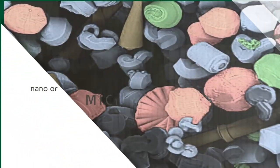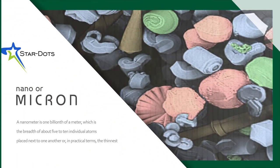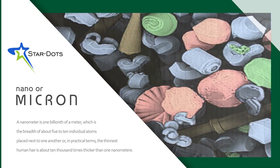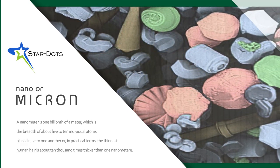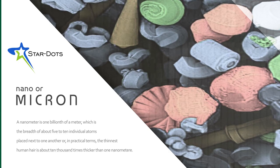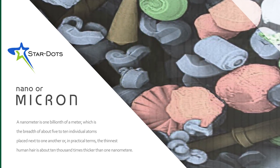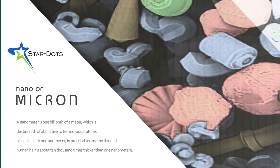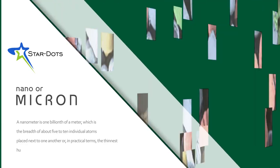Star dots are nano or micron meters in size. A nanometer is one billionth of a meter, which is the breadth of about five to ten individual atoms placed next to one another. Or, in practical terms, the thinnest human hair is about 10,000 times thicker than one nanometer.